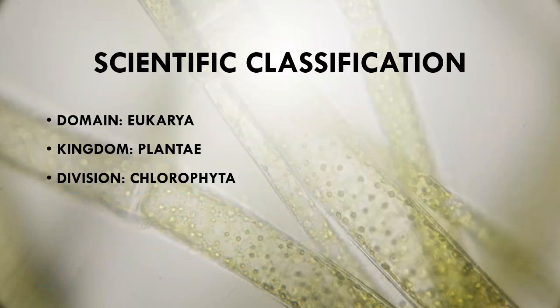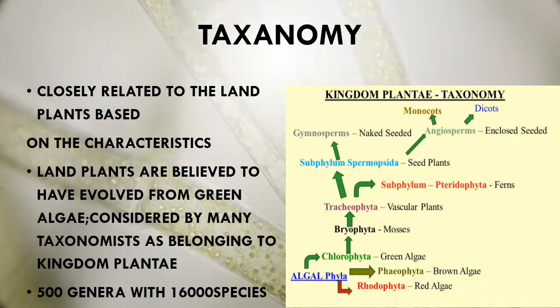Scientific classification: Domain Eukarya, Kingdom Plantia, Division Chlorophyta. In the taxonomy diagram, you can see the algae phyla include Rhodophyta, Chlorophyta, Bryophyta, and Tracheophyta, with subgroups including Gymnosperm, Angiosperm, Monocot, and Dicot.